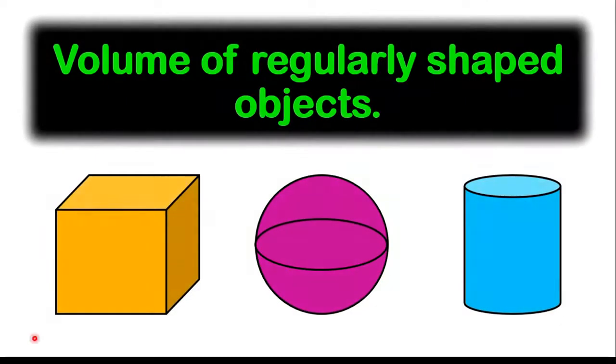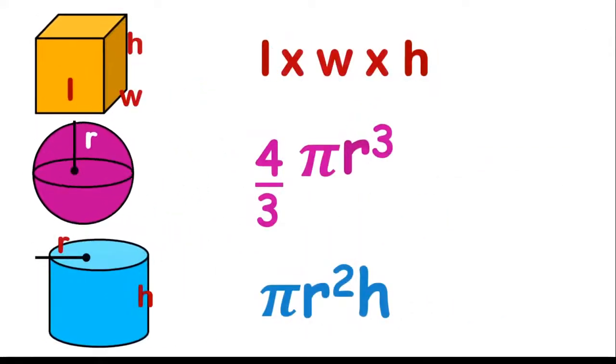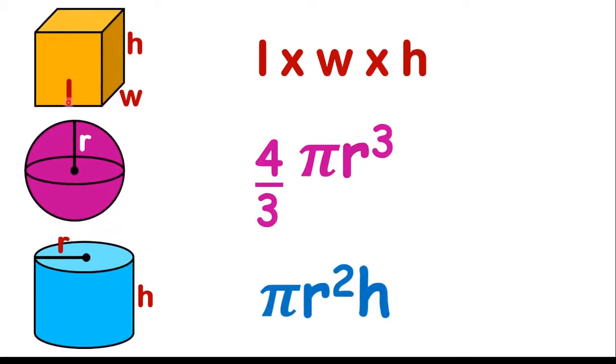Now, to measure the volume of regularly shaped objects, there are some known shapes that we can look at. So we could have our square, for example, or at least our rectangle. And so the same thing applies for both. And so we could measure the volume for our square or rectangle by saying length times width times height.